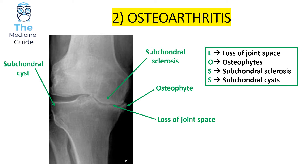We can see that the joint space on the medial aspect of the knee is far narrower than on the lateral aspect. Finally, we can see the presence of subchondral cysts, which appear as a dark black area on the knee x-ray. Those are the key features of osteoarthritis to keep in mind for your exams.